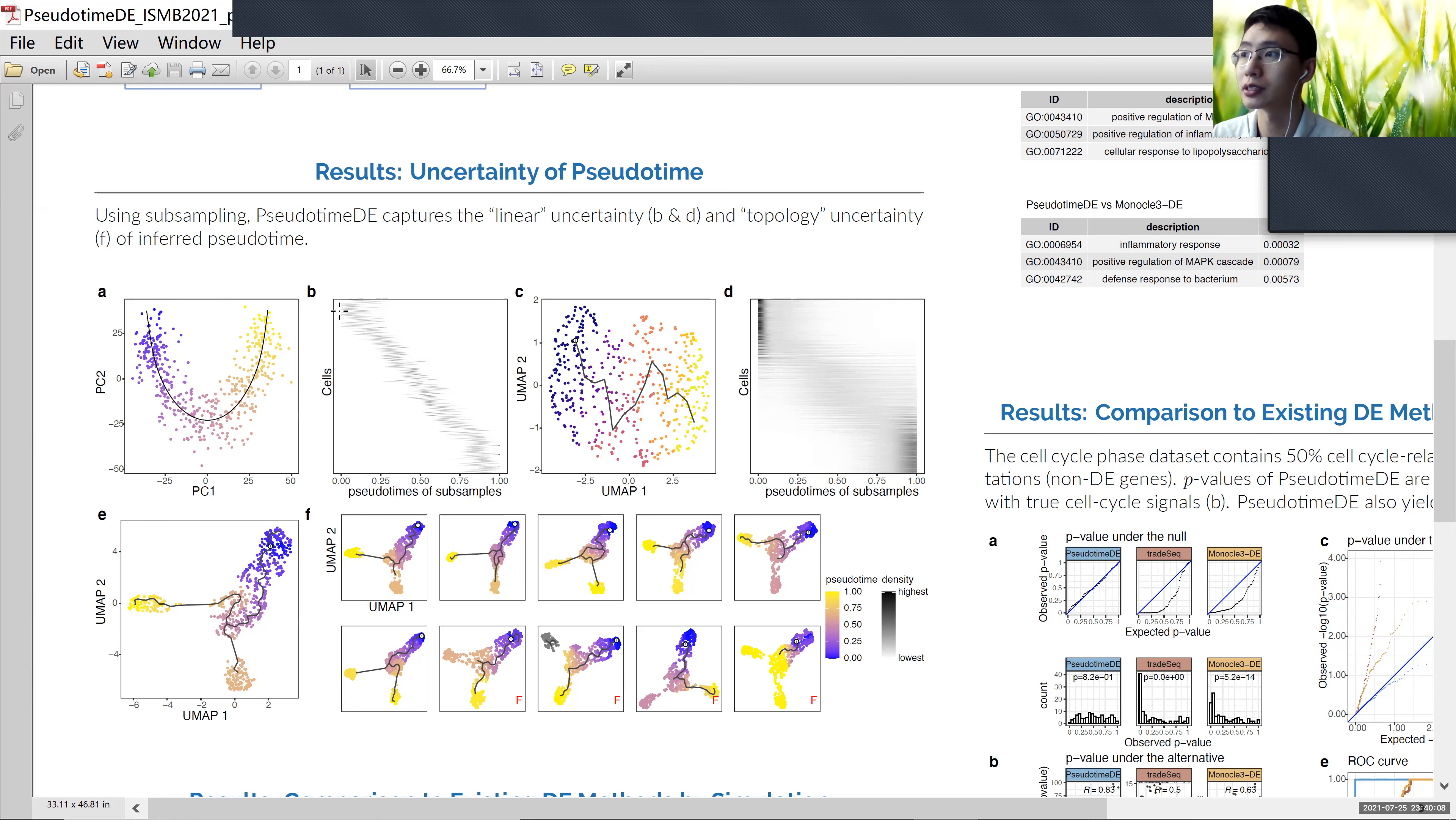We can see those subsample pseudotimes are randomly distributed along the zero to one range. Therefore, we call this pseudotime uncertainty a linear uncertainty.